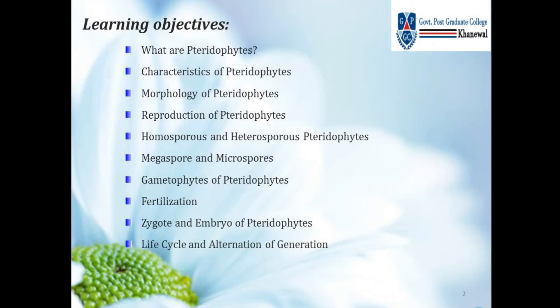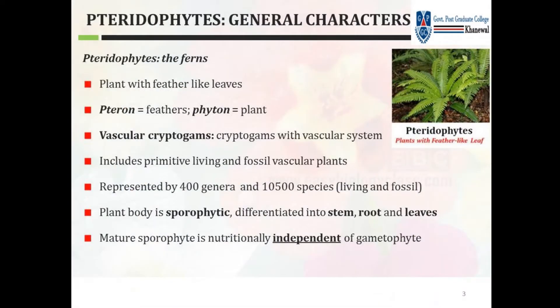We will discuss characteristics of Tracheophytes, their morphology, reproduction, homosporous and heterosporous types, megaspores, microspores, gametophytes, fertilization, zygote and embryo formation, and finally life cycle and alternation of generations in Tracheophytes.